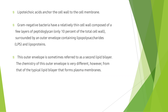Gram negative bacteria have a relatively thin cell wall composed of few layers of peptidoglycan, which is surrounded by an outer envelope called lipopolysaccharides and lipoproteins. This outer envelope is sometimes referred to as a second lipid bilayer. The chemistry of this outer envelope is very different, however, from that of the typical lipid bilayer that forms the plasma membrane.